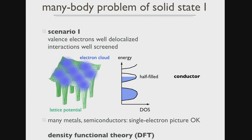To position the methods I'll be talking about, I break down all of solid state physics into two simple pictures. The first is the case where valence electrons are relatively well-delocalized — smeared out like a soup — meaning interactions are relatively well-screened. This is the band picture of essentially non-interacting electrons, where a half-filled top band is a conductor and a fully filled band is an insulator. For many metals and semiconductors, this is a wonderful picture, and methods like density functional theory work extremely well. We are not concerned with this type of problem.